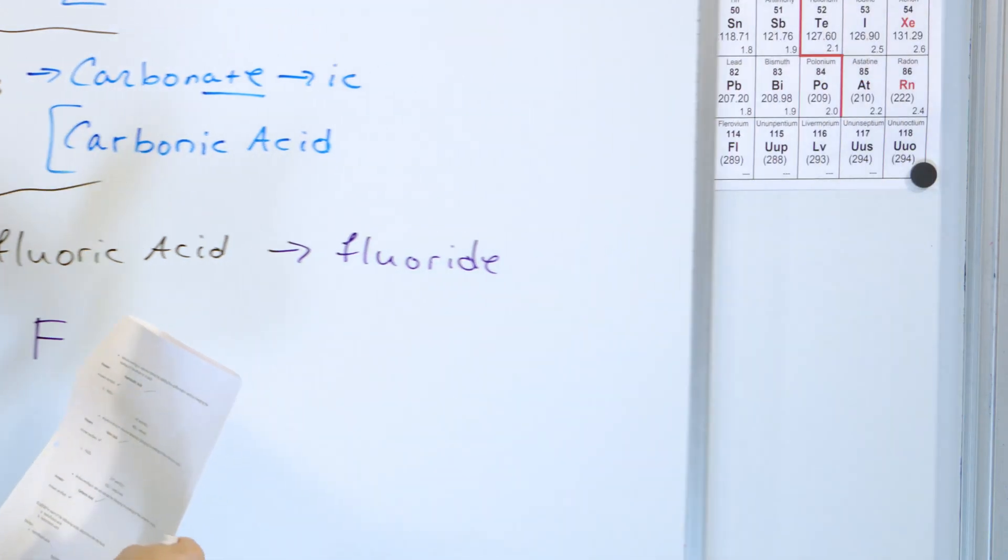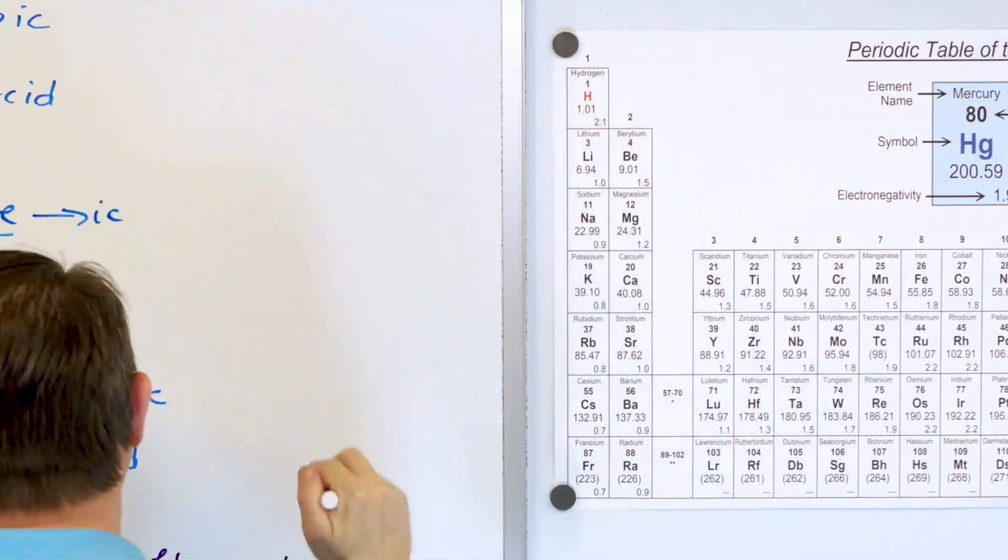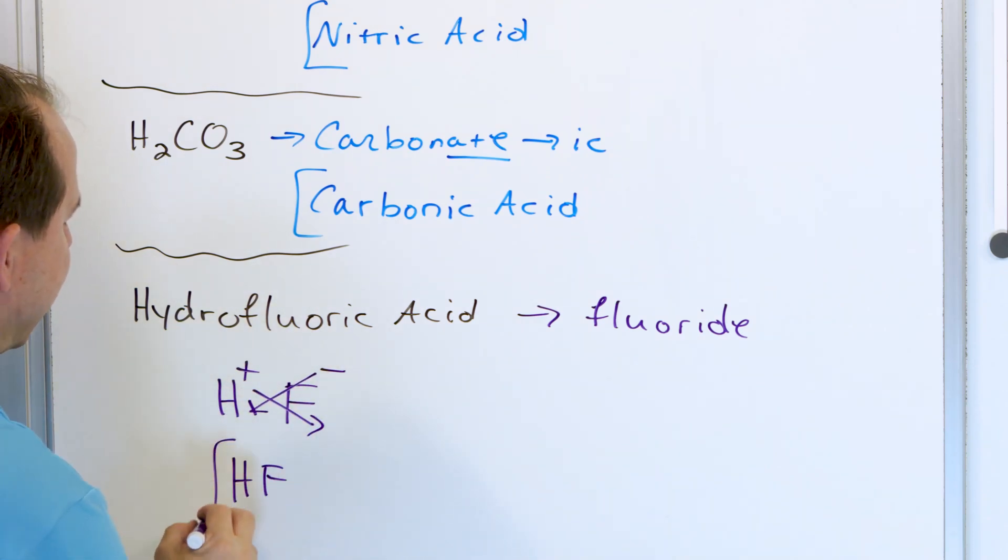Now what is the charge that fluorine likes to take? Fluorine likes to take negative one, and hydrogen likes to take positive one. So negative and positive, and we do the crisscross, and we get HF. And that's it. HF is the formula for the acid hydrofluoric acid.